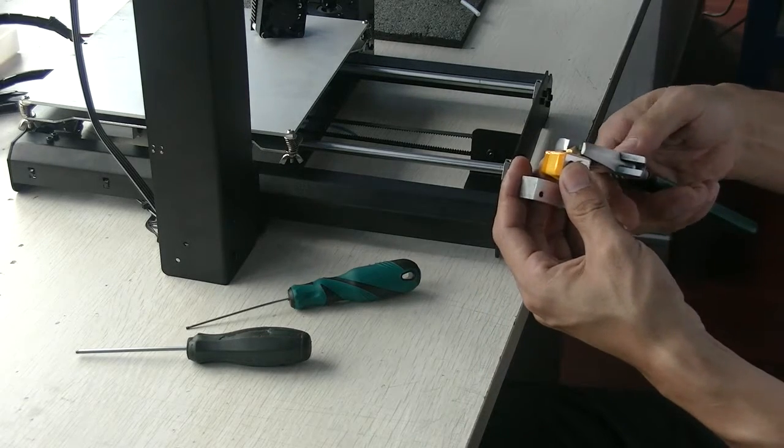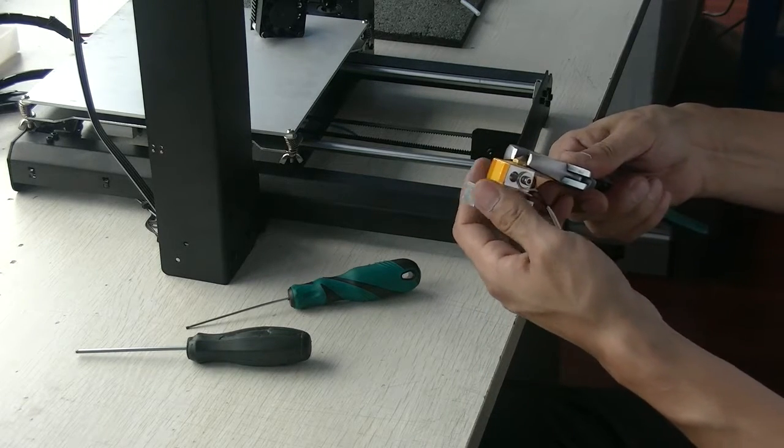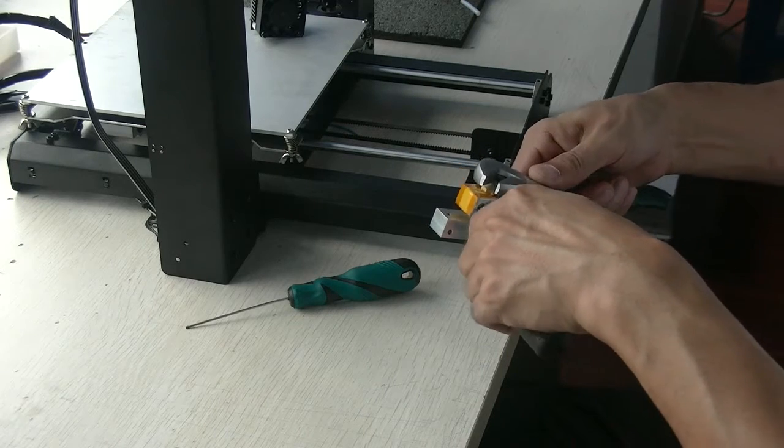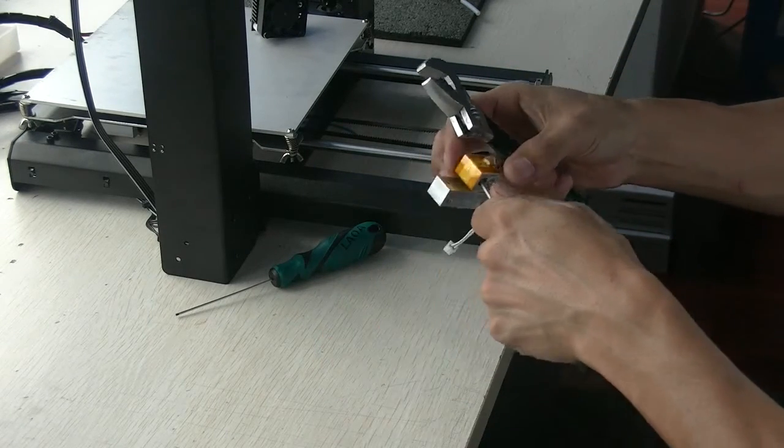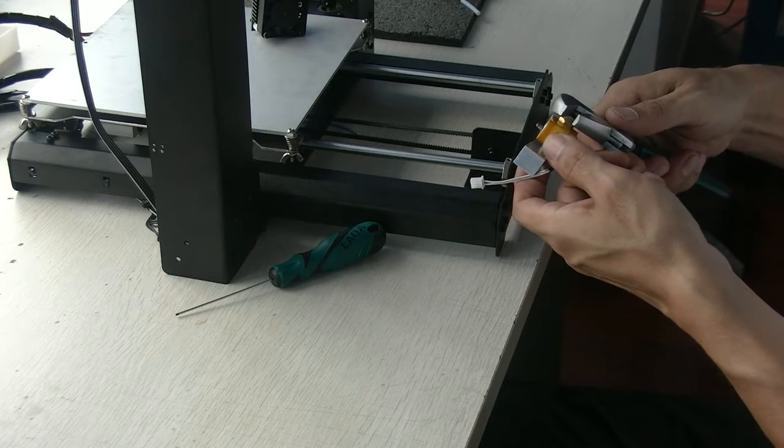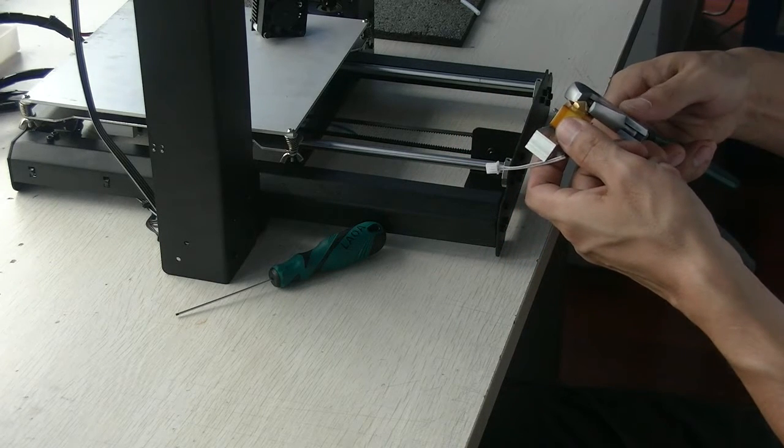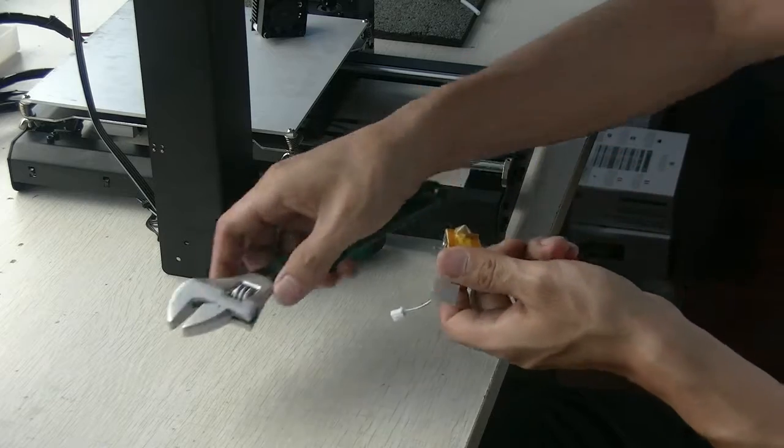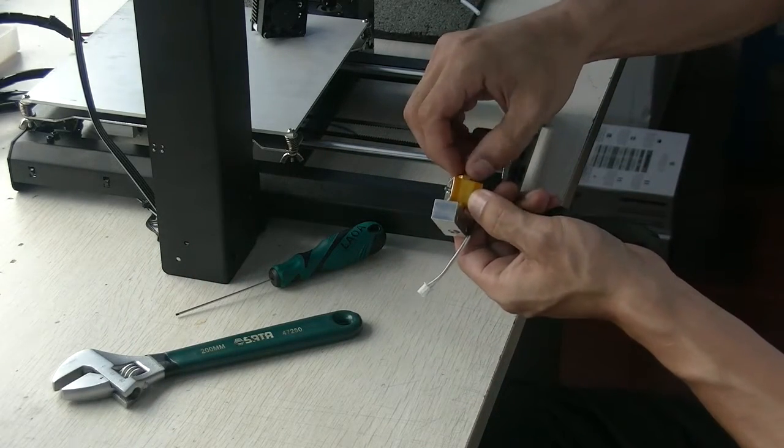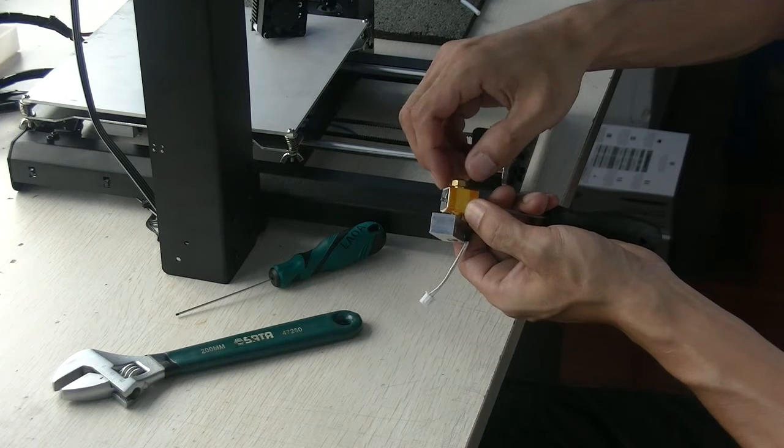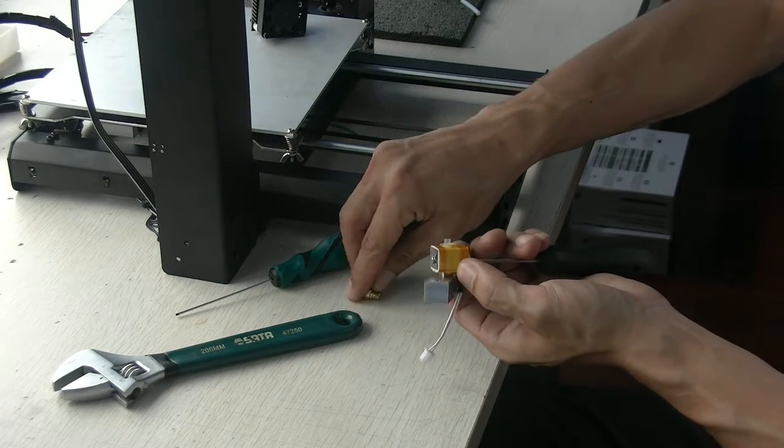You just want to use one wrench to hold the logo and then use another. You may need a screwdriver to hold it. Then you can disassemble this.